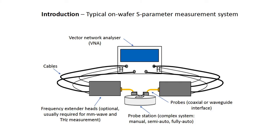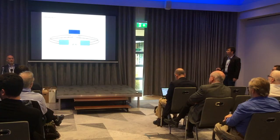I'm sure you're all very familiar with this — this is a typical on-wafer S-parameter measurement system. You have a VNA and cables, and a frequency extender to move our frequency to millimeter-wave and even terahertz. And then you have probes, and you have a probe station.